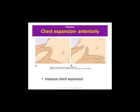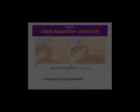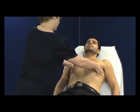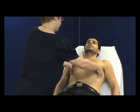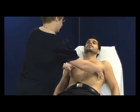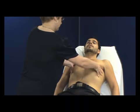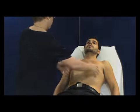To assess chest expansion, place the palms of the hands symmetrically on either side of the chest wall with the thumbs pointing towards the midline. Ask the patient: 'Could you please take a deep breath in and out?' Feel whether the fingers move apart symmetrically. The thumbs should be separated by at least 5cm.